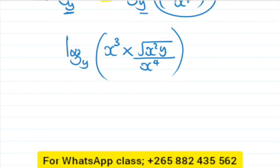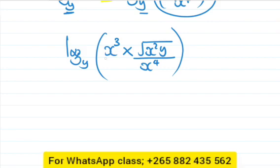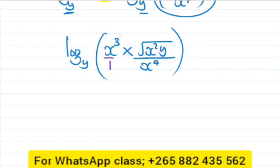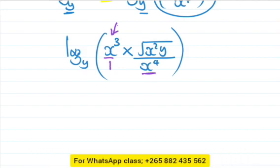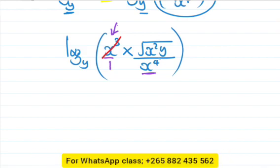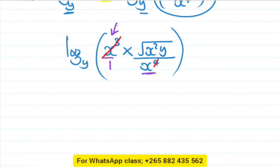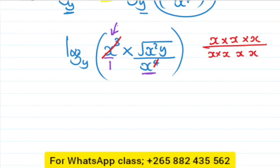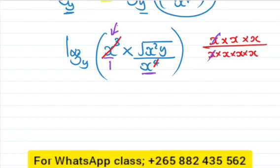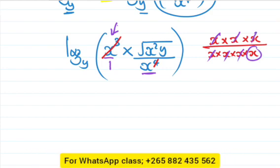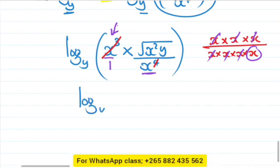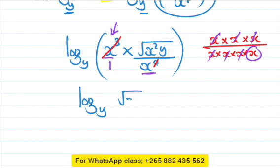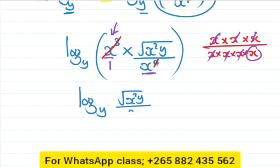Let me simplify. We have x cube divided by x to the power 4, which is x times x times x divided by x times x times x times x. This x and that x will cancel, this x and that x will cancel, this x and that x will cancel. So we're gonna have log base y of the radical x square y divided by x.